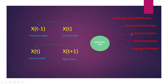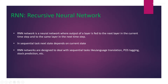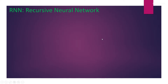In these kinds of cases, the current state or current element is dependent on its previous element. To deal with sequential tasks, the RNN network was designed. In an RNN network, the output of a layer is fed to the next layer in the current time step and to the same layer in the next time step. To get a better understanding, let's take one example.